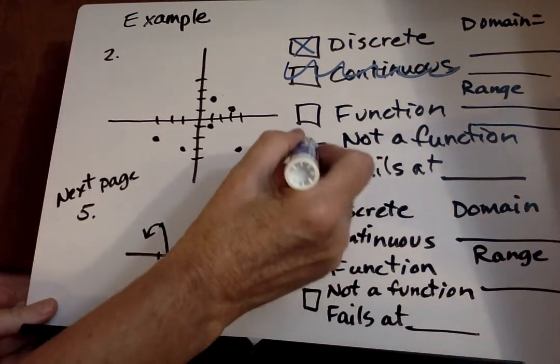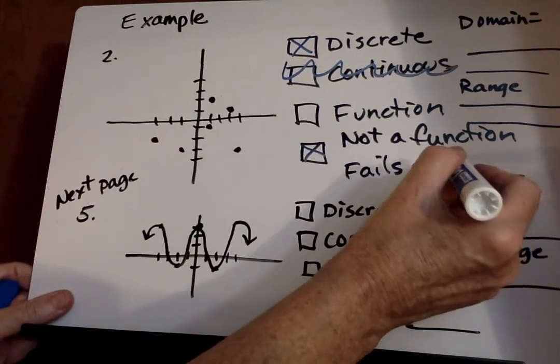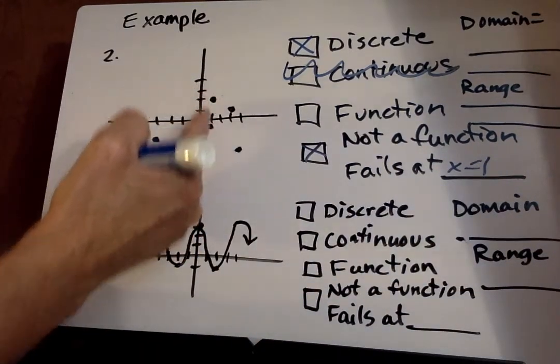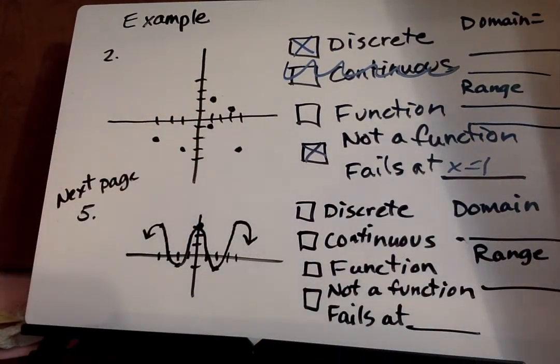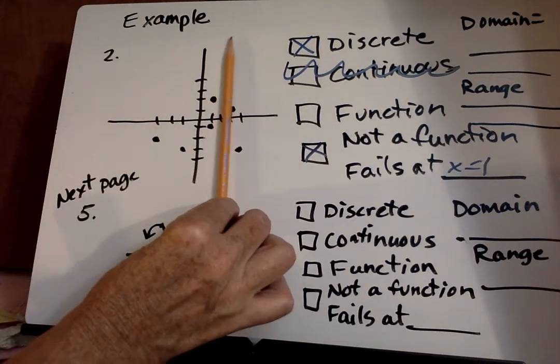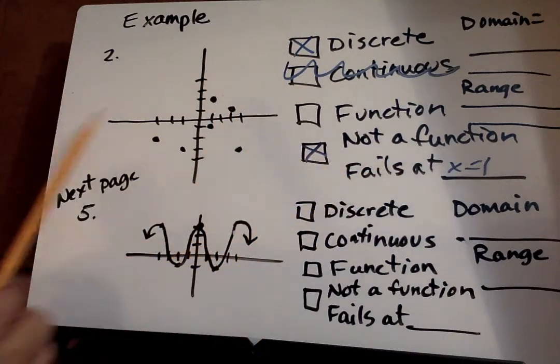So I'm going to put not a function. It fails at what point? X equals 1 right there. Because see how you have those two points in the same point? And then we go on and go BAM BAM. And they're separate. See? Here though BAM BAM that means it fails at 1.